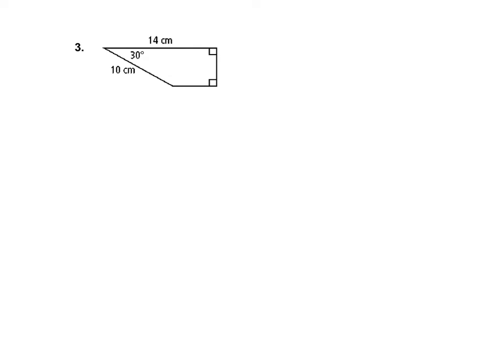In this case I'm missing the height, so I need to find it. This is a 30-60-90 triangle, so my shorter leg is half of the hypotenuse, meaning the height here is 5 centimeters. The distance along the base from that point is 5 times the square root of 3 centimeters.